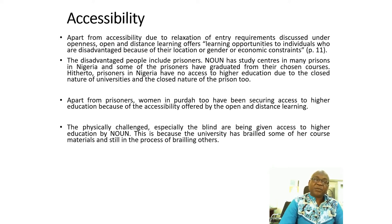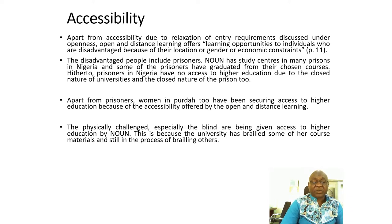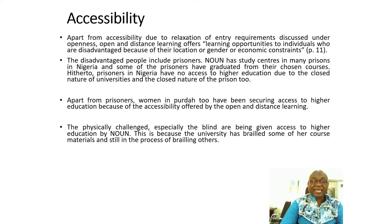Another characteristic of the open and distance learning system is accessibility. Here we mean that we are removing the barriers that have made some people disadvantaged because of their location, gender, or economic constraints. A good example here is the issue of prisoners. The National Open University of Nigeria has study centers in many prisons in Nigeria, and some of the prisoners have graduated from their chosen courses.